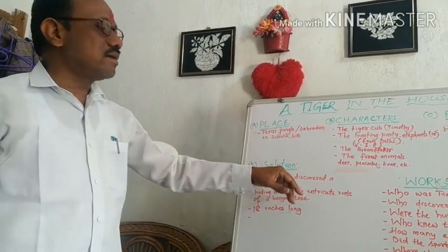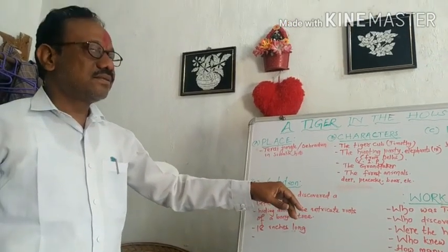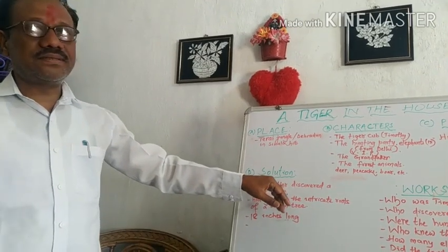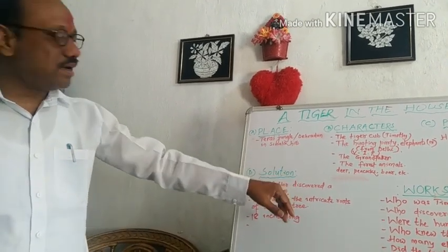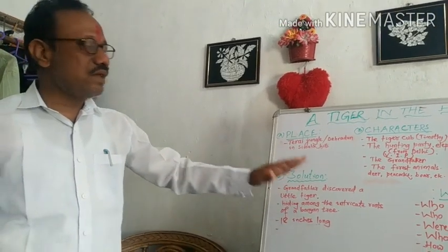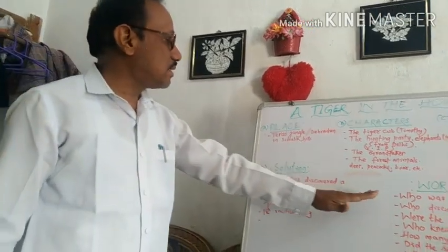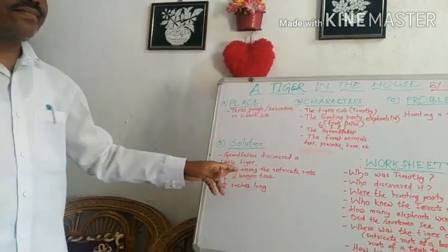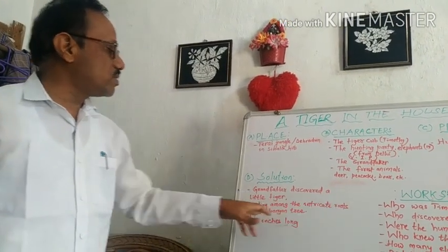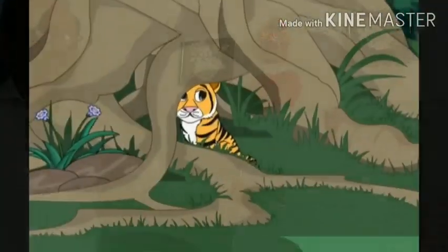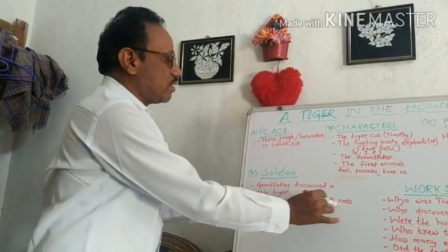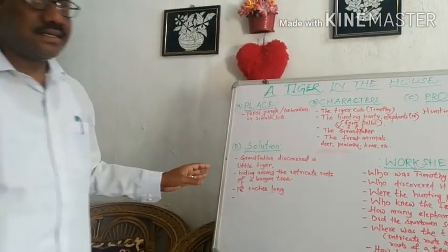A little tiger was discovered. Who discovered the little tiger? Grandfather discovered a little tiger. Where was it? It was hiding among the intricate roots of a banyan tree.